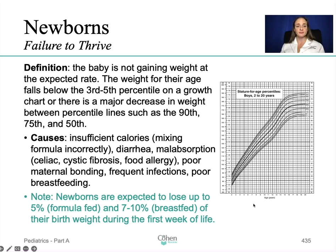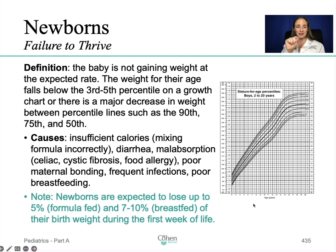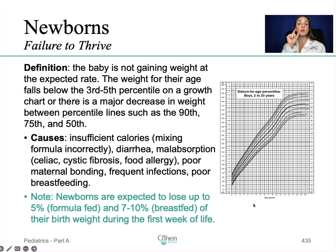Causes of failure to thrive include insufficient calories such as mixing formula incorrectly, diarrhea, malabsorption such as celiac disease or cystic fibrosis, food allergies, poor maternal bonding, frequent infections, and poor breastfeeding. An important highlighted note: newborns are expected to lose up to 5% if formula-fed and 7–10% if breastfed of their birth weight during the first week of life. Write this down and review it again and again — it's a good test question.